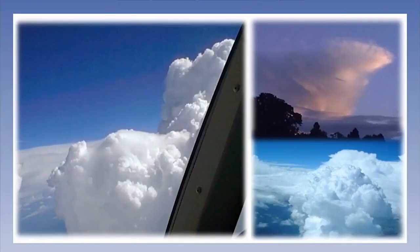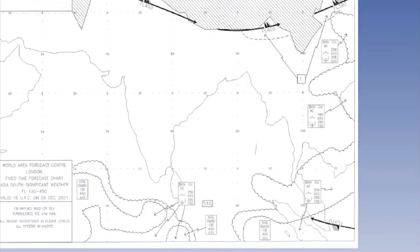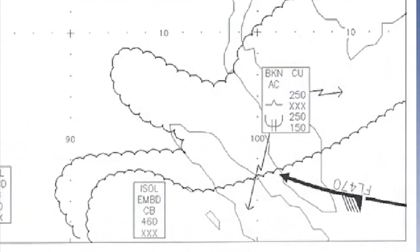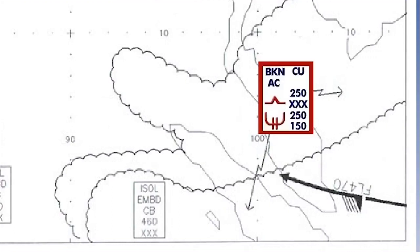As we learnt earlier, the only clouds displayed on high-level charts are embedded cumulonimbus. On the medium-level charts, rather more cloud information is displayed. Any cloud types which are likely to have a significant impact on aviation are clearly highlighted. The impact is related to moderate or severe icing and or turbulence. If either or both of these phenomena are forecast, then the flight levels between which they can be expected are clearly displayed in the cloud text box.